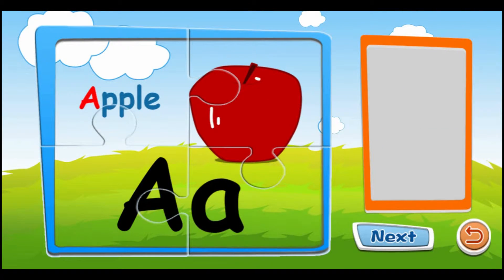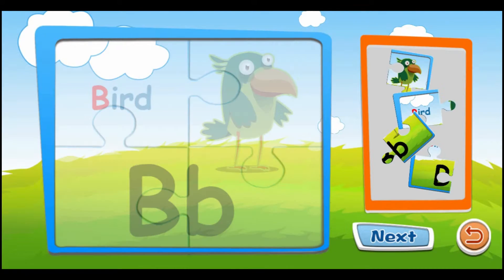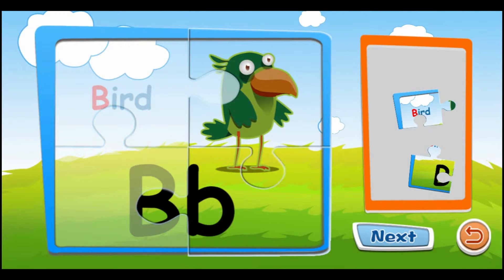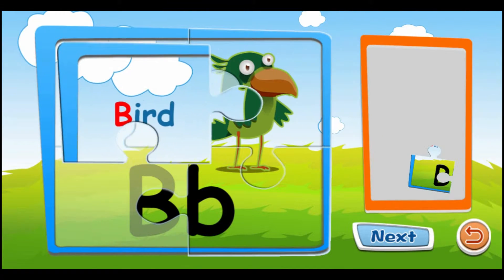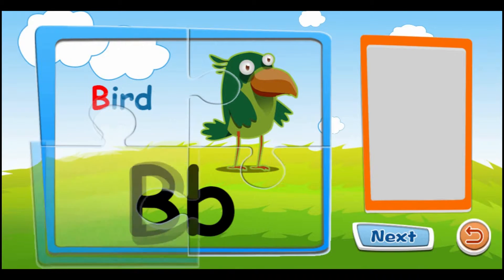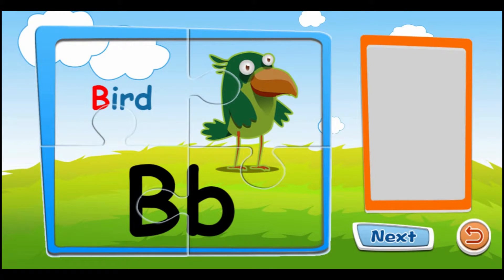A is for apple. A, A, A. B is for bird. B, B, B.